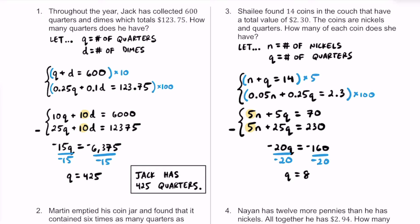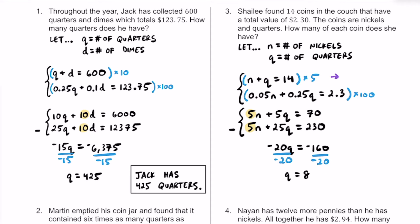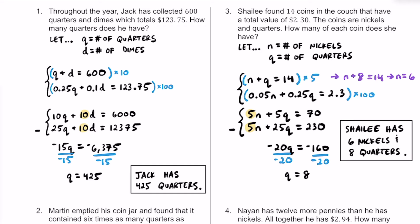Now that we know Q equals 8, we can plug that into the top equation: N plus 8 equals 14, so N equals 6. Using our system of linear equations, we found that Shaylee has 6 nickels and 8 quarters.